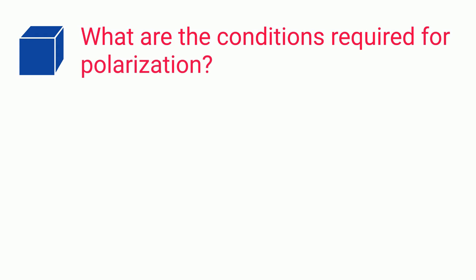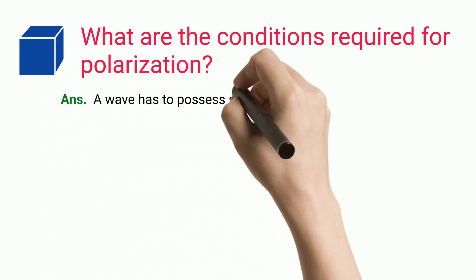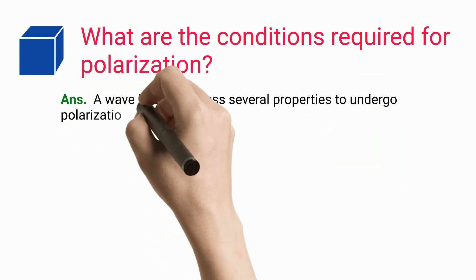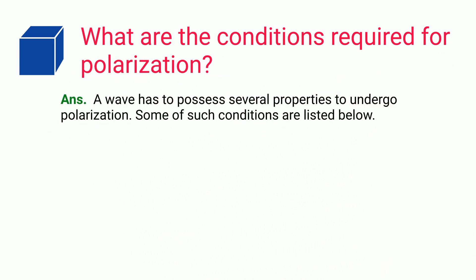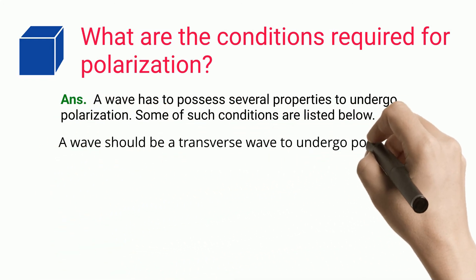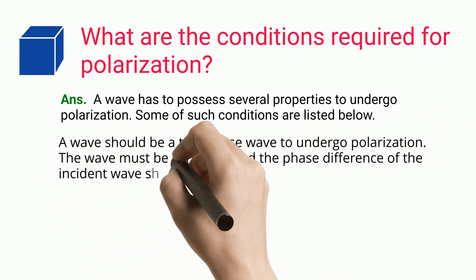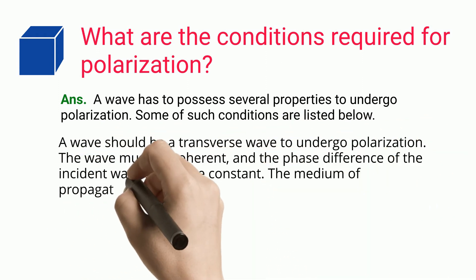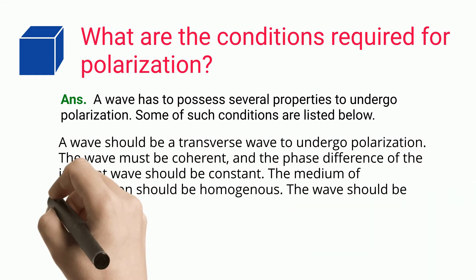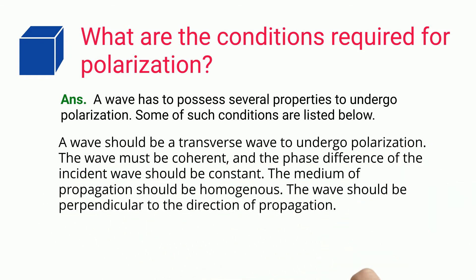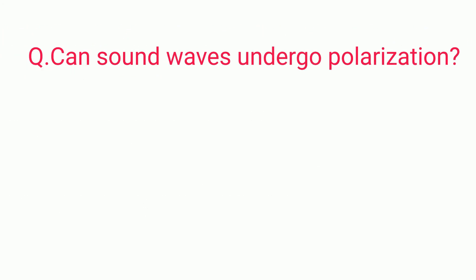What are the conditions required for polarization? A wave has to possess several properties to undergo polarization. A wave should be a transverse wave to undergo polarization. The wave must be coherent, and the phase difference of the incident wave should be constant. The medium of propagation should be homogeneous. The wave should be perpendicular to the direction of propagation.